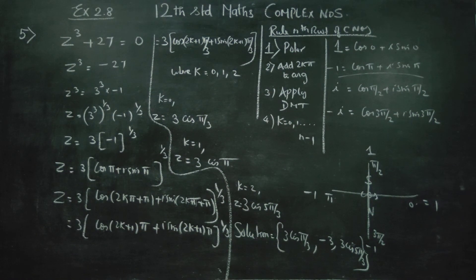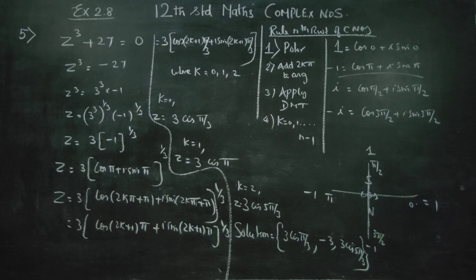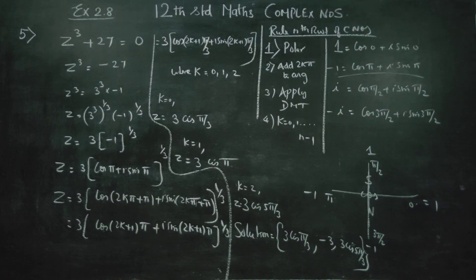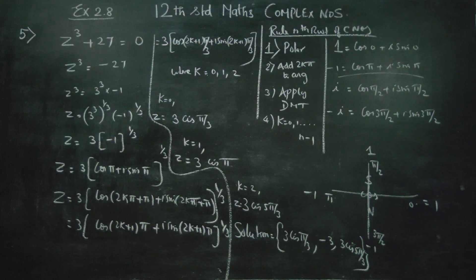So you get three answers, which is expected for a cube root. To summarize: know the ready-made polar forms for 1, minus 1, i, and minus i. To find the nth root of a complex number: (1) change into polar form, (2) add 2kπ to the argument, (3) apply De Moivre's theorem, then substitute k equal to 0, 1, 2, up to n minus 1. Thank you.